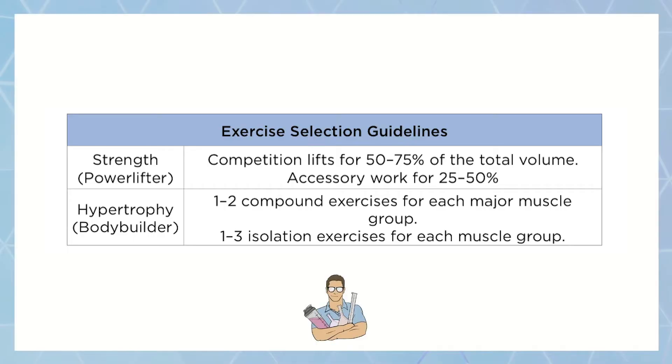If your goal is hypertrophy, then you should be doing one to two compound lifts per session and then maybe anywhere from two to four accessory movements, depending on what your overall volume scheme looks like.